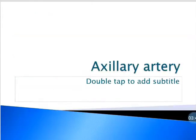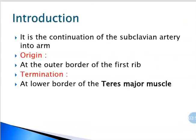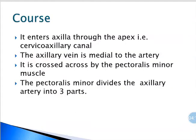Next we discuss the axillary artery. This artery is the continuation of the subclavian artery into the arm. The origin of the axillary artery is at the outer border of the first rib. The termination is at the lower border of teres major muscle. The axillary artery enters the axilla through the apex, that is the cervico-axillary canal.